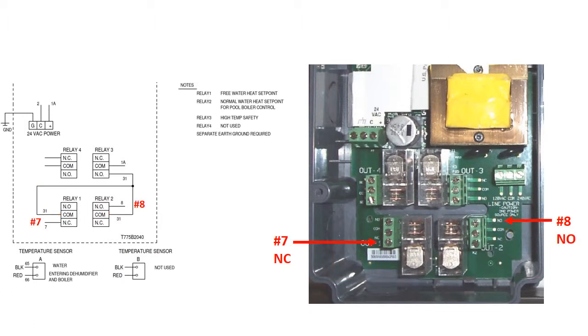The normally open terminal on relay 2 connects to the number 8 terminal on the dehumidifier. And on relay number 1, it is the normally closed terminal that connects to number 7. Relay number 4 is not used on this example.